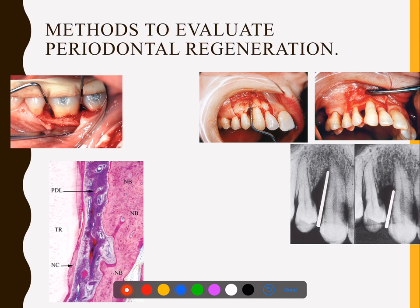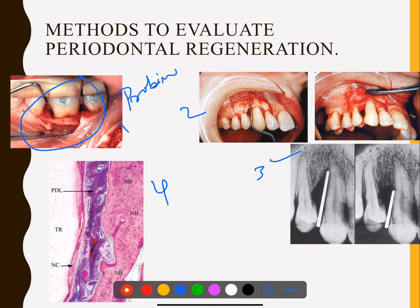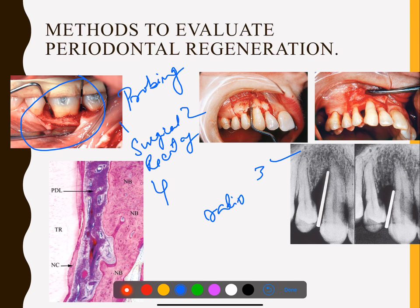How do you evaluate whether you have achieved new attachment? The methods are: first, probing; second, surgical re-entry; third, radiographs; and fourth, histological evaluation — which requires extraction of the tooth and examination of a section. These are the four methods to check for regeneration.